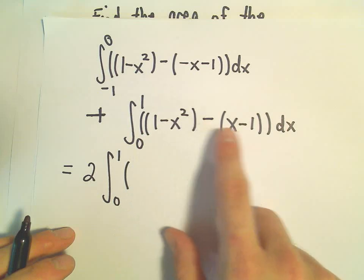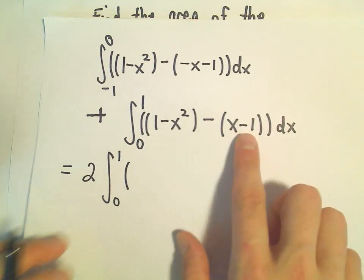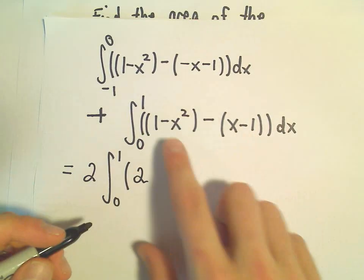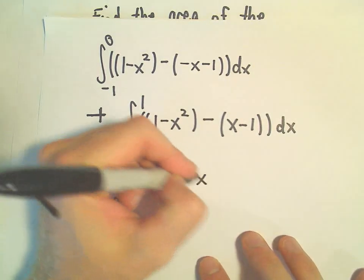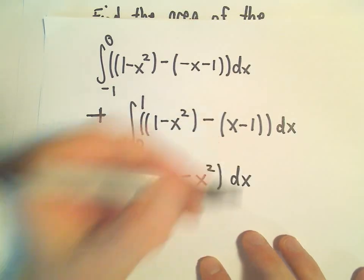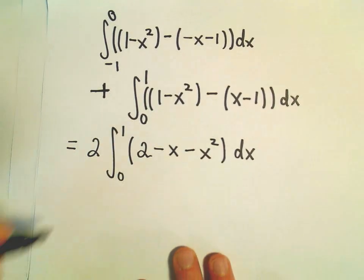We would have 1 minus negative 1, or 1 plus 1, so that would give us 2. It looks like we would be left with a negative x, and then we would have a negative x squared. So all of that is being integrated with respect to x.